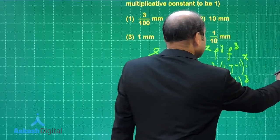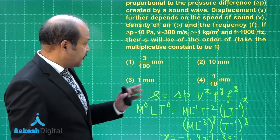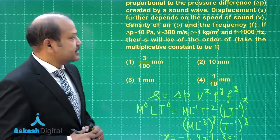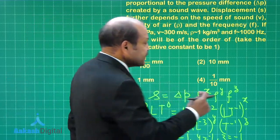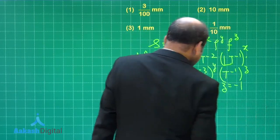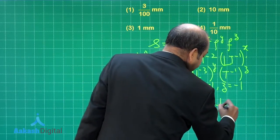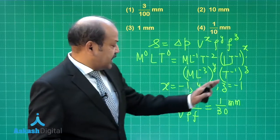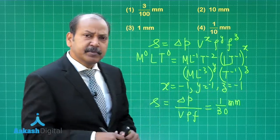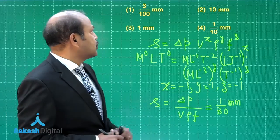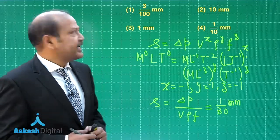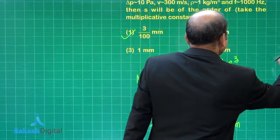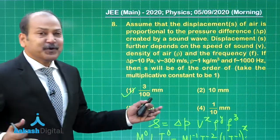Let us put those values. For Δp the value is 10 Pascal, for v it is 300 meter per second, ρ is 1 kg per cubic meter and frequency is 1000 hertz. Now if we substitute all these values, this is coming out as 1 by 30 millimeter. And if you look at the options, if we multiply the numerator and the denominator with about 3, this is very close to 3 by 100 millimeter. So we will take the first option as the correct option. The value of s is of the order of 3 by 100 millimeter and let us now go to question number 9.